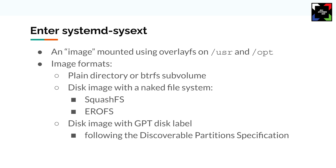Enter systemd-sysext as another alternative. What is systemd-sysext? I'm going to use the term 'image' during the talk, referring to the systemd-sysext image. An image can be a plain directory, a Btrfs subvolume, or an erofs or squashfs image that you mount as an overlayfs on /usr or /opt. Everything can be a sysext image, which is very convenient for a system that has a read-only /usr.